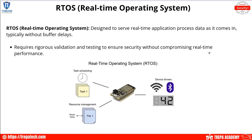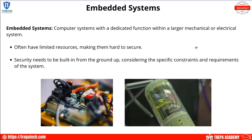Real-time operating systems are purpose-built to serve real-time application processing as data comes in. They're typically built on small chips or form factors and are not designed for a UI/UX experience. Embedded systems are computer systems with a dedicated function within a larger mechanical or electrical system. These often have limited resources, making them hard to secure — similar to IoT devices. When something is purpose-built for a specific function, security is not always top of mind; quick response and high uptime are the priorities.